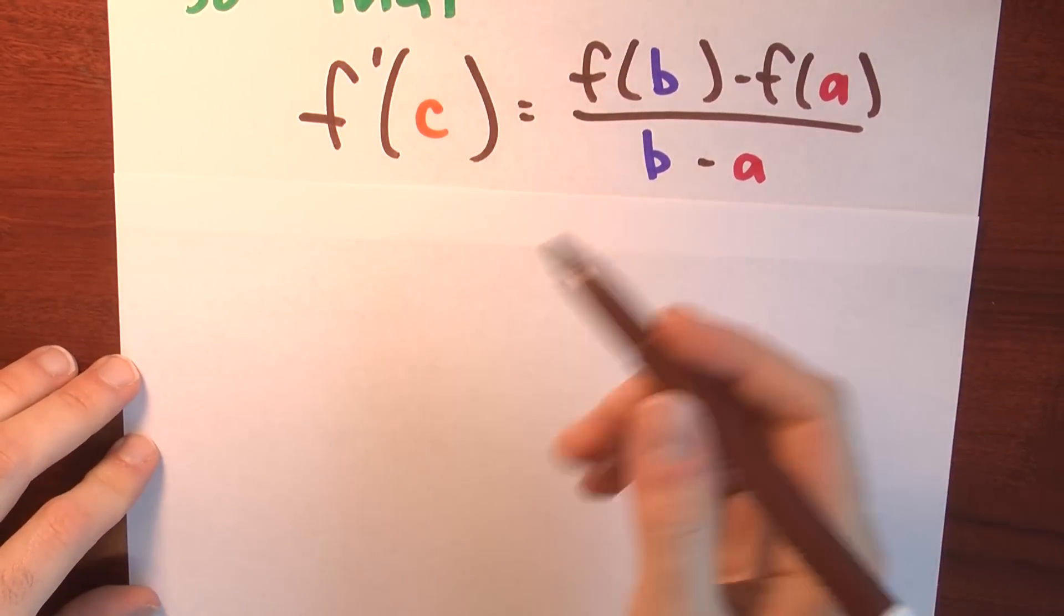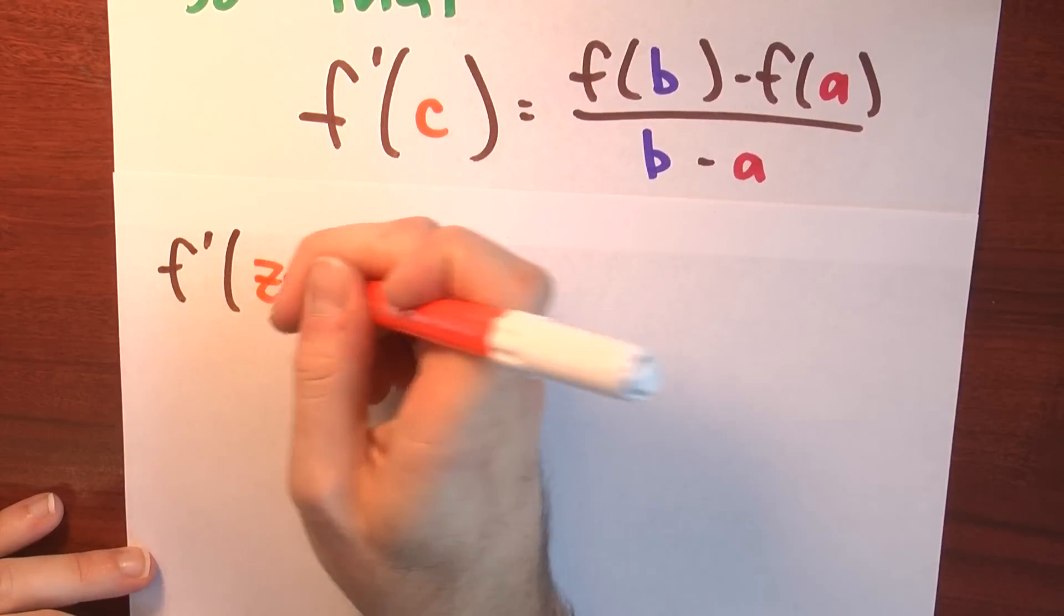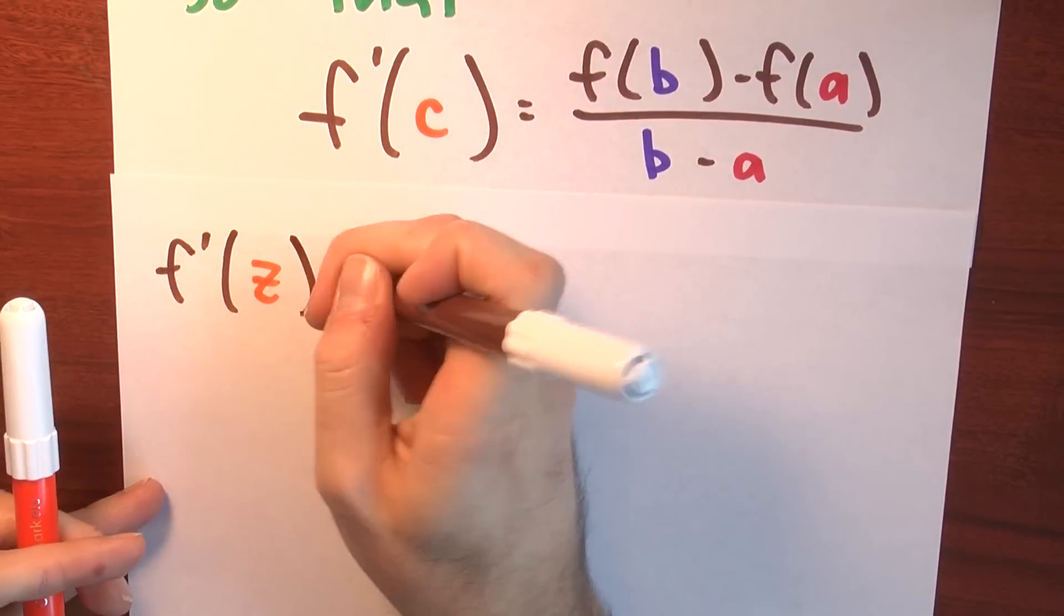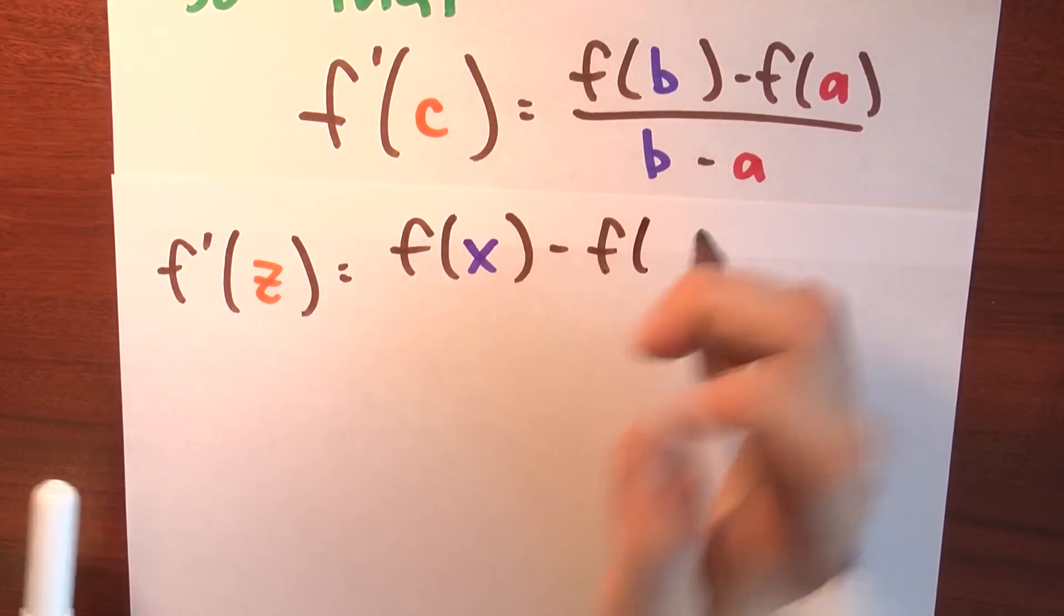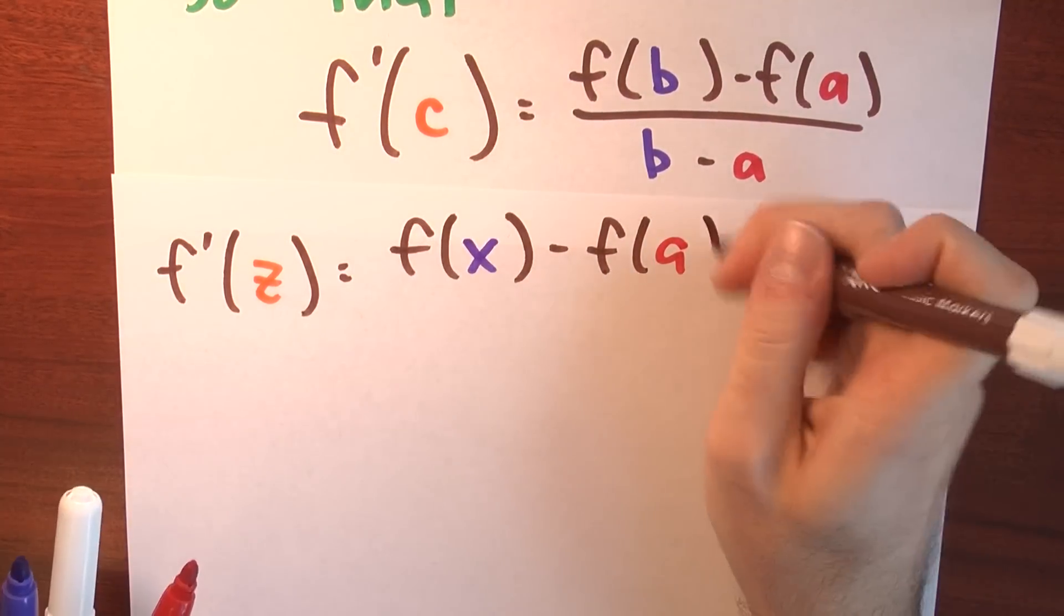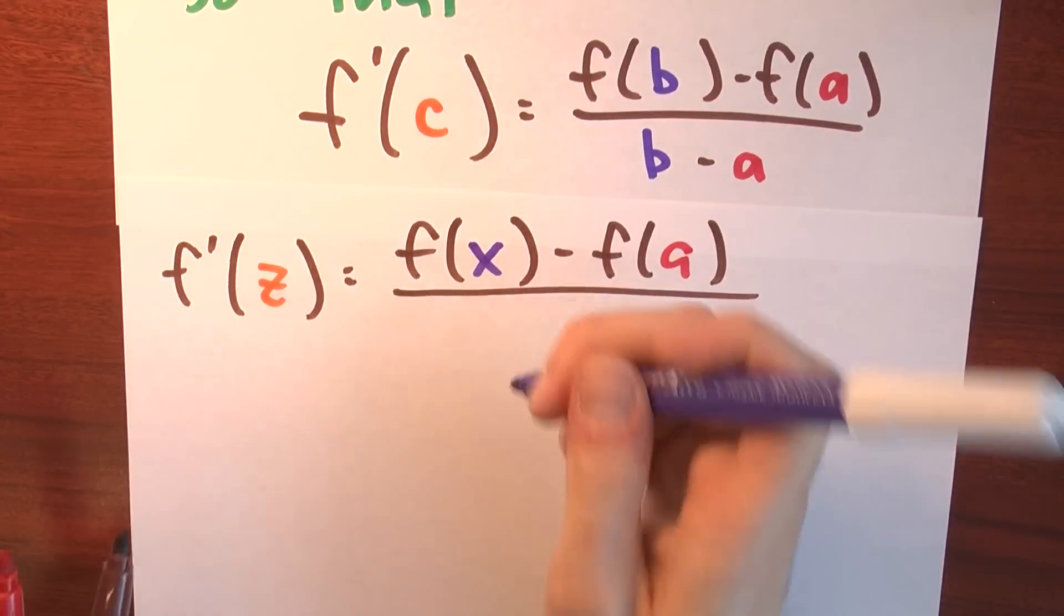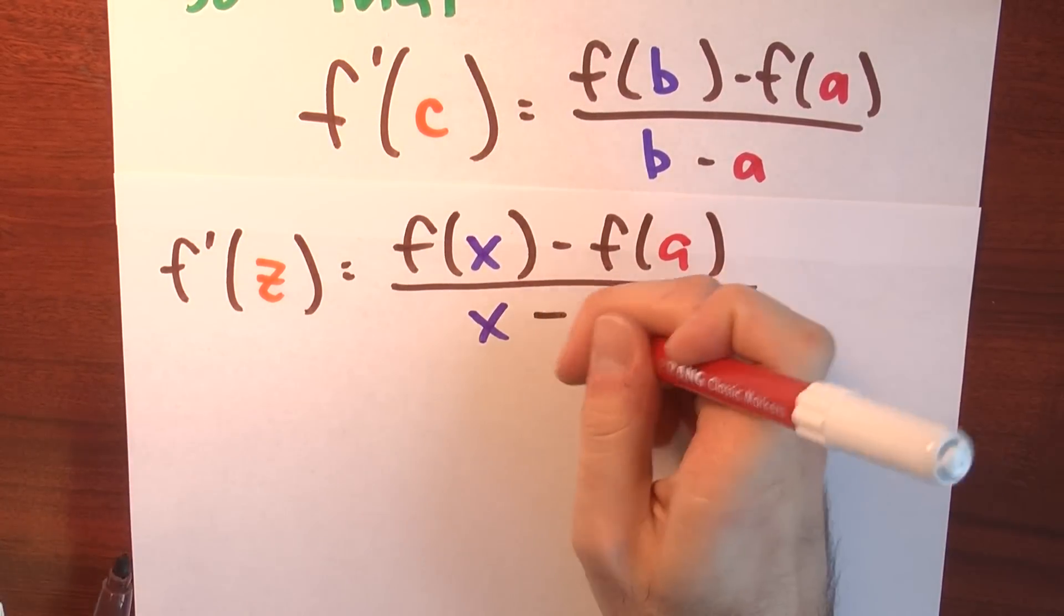Let me rearrange this a bit. So I'm just going to change the names of some of these variables. So I'll write f prime not of c, but of z, is equal to f not of b, but of x. And I'm going to keep the name of a the same. So I'll call that f of a. And then I'll again divide by x minus a.